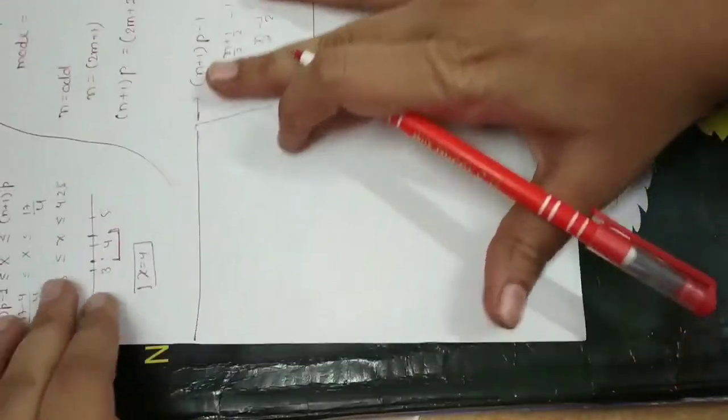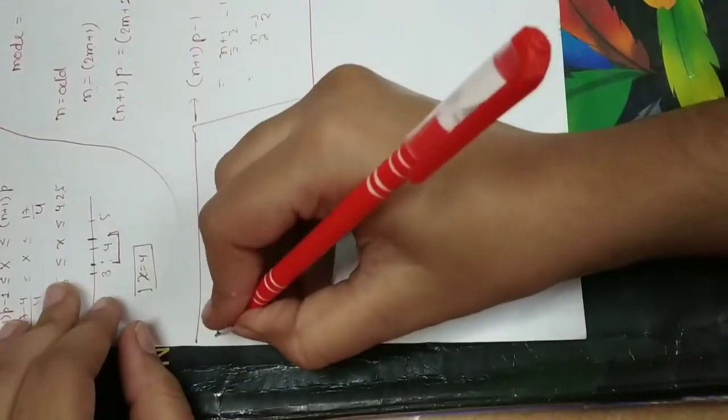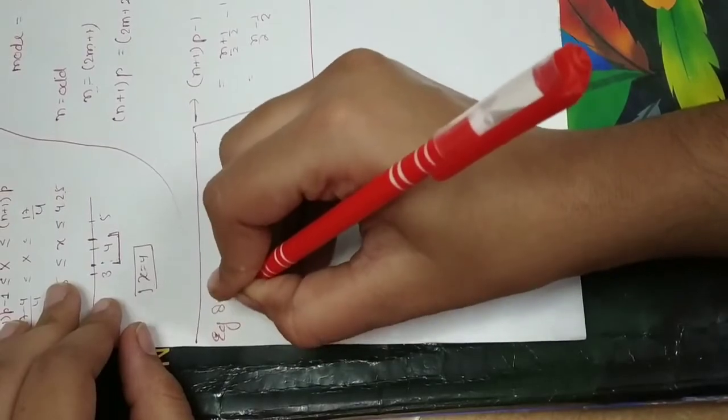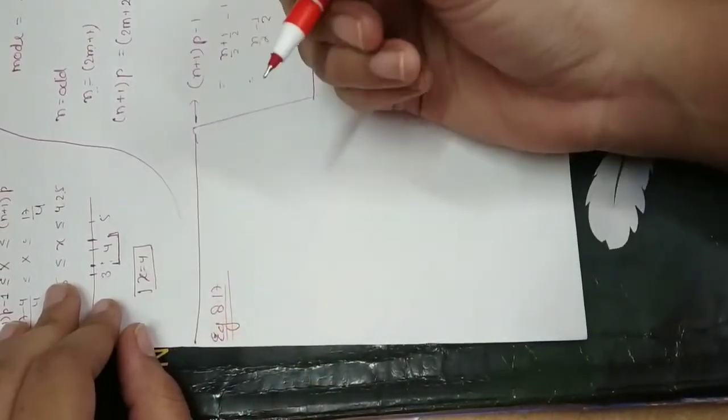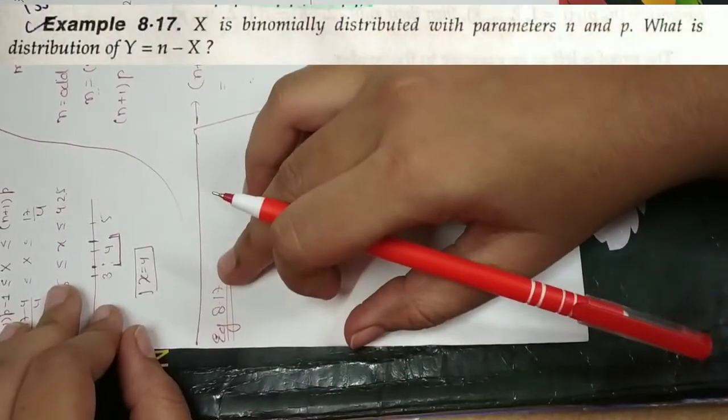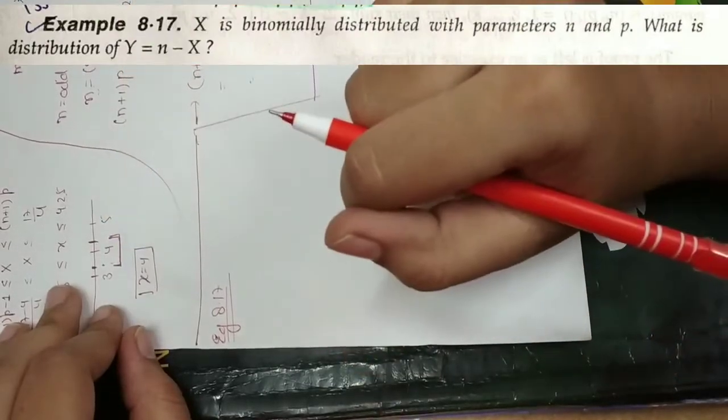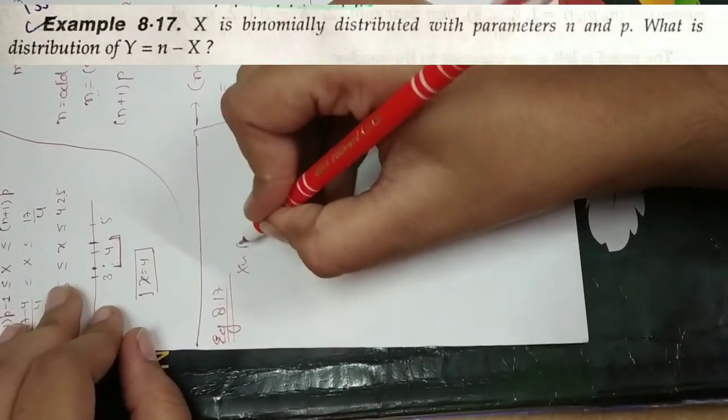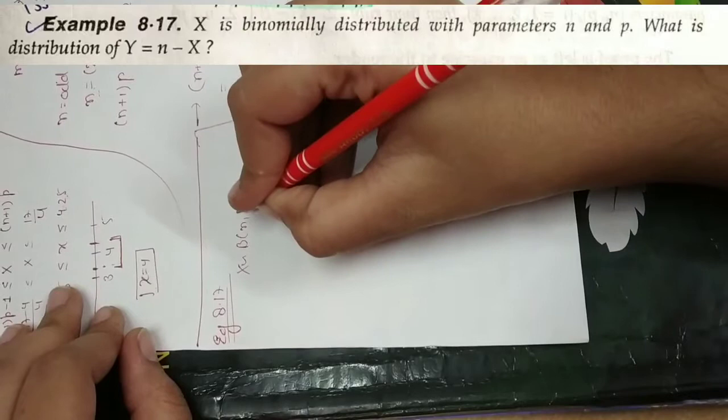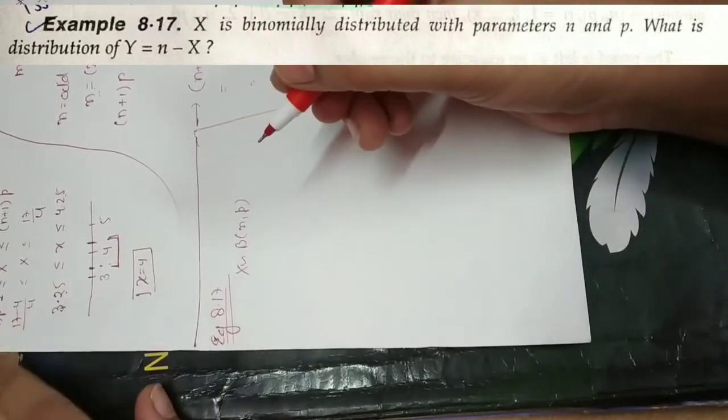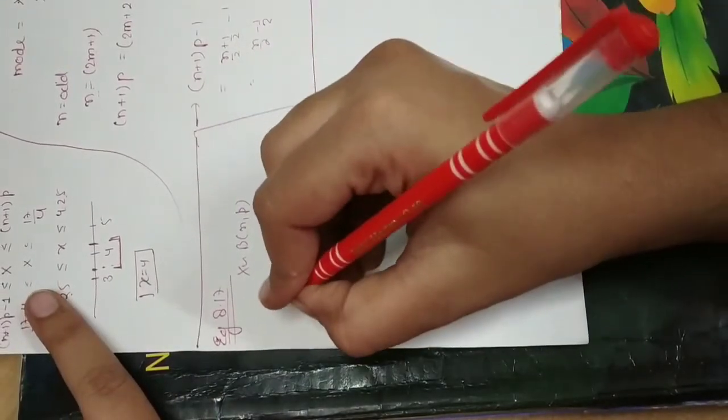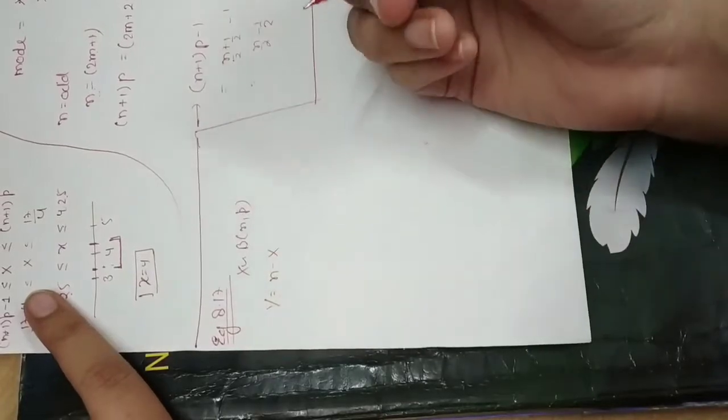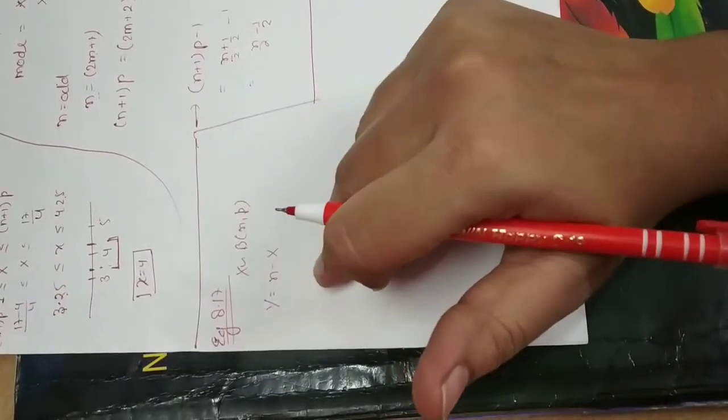Hello everyone, today in this video I am going to solve example 8.17. This example says X is a binomial distribution with parameters n and p, that is it follows binomial distribution with parameters n and p. What is the distribution of Y equals n minus X? Now we need to know Y equals n minus X distribution.